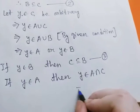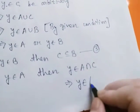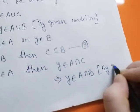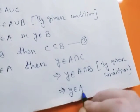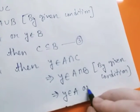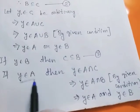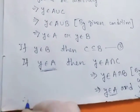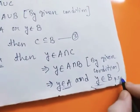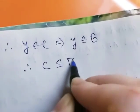If y belongs to A, then y belongs to both A and C, that is y belongs to A intersection C. This implies y belongs to A intersection B by the given condition. So this implies y belongs to A and y belongs to B. Therefore y belongs to C implies y belongs to B. Therefore C subset of B — we name this case 4.